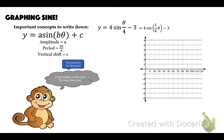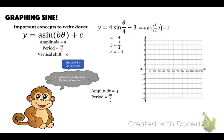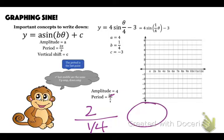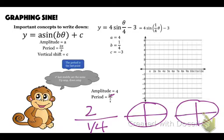If it's ever written like this, you can rewrite it as four sine of one-fourth theta minus three. That makes it easy to see that b is one-fourth. So a is four, b is one-fourth, c is negative three. The amplitude is four. For the period, two pi over one-fourth — to visualize: how many times does one-fourth go into two? If we break two into fourths, that's one, two, three, four, five, six, seven, eight times. So the period is eight pi.